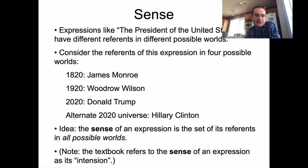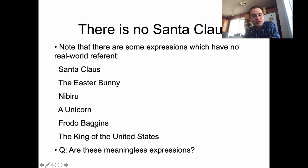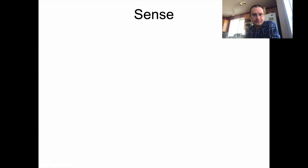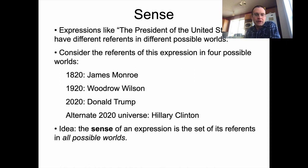The textbook refers to the sense of an expression as its intension. We can think about what the sense of these expressions are because you have to rely on different possible worlds for them to make sense. The King of the United States — there might be another possible world where the United States is a monarchy. We can think about the possible world of Middle Earth in which a hobbit like Frodo Baggins might exist. Or a world where there are unicorns — horses with a single horn. We know what those possible worlds would be like.